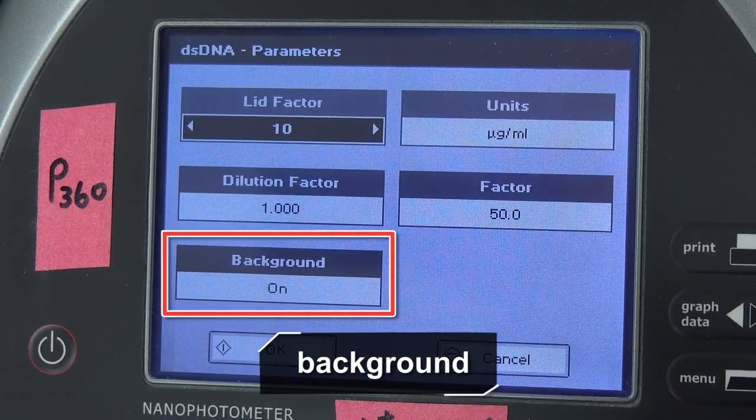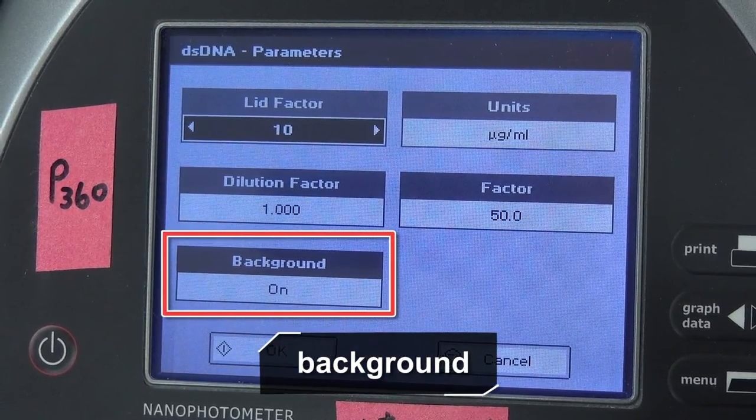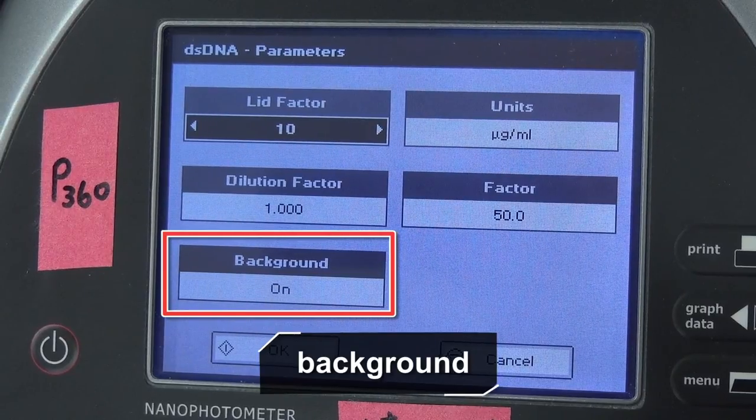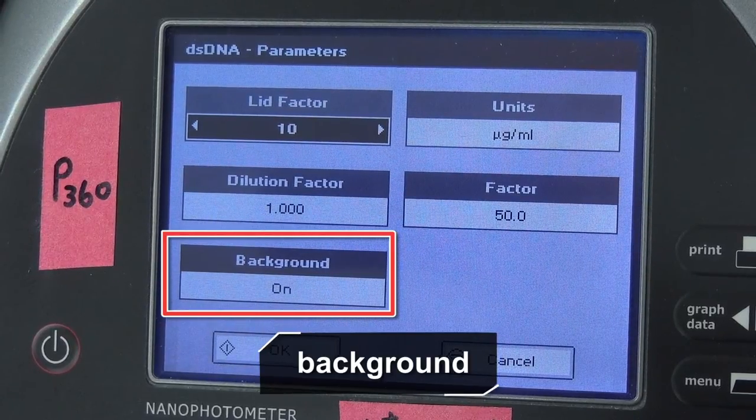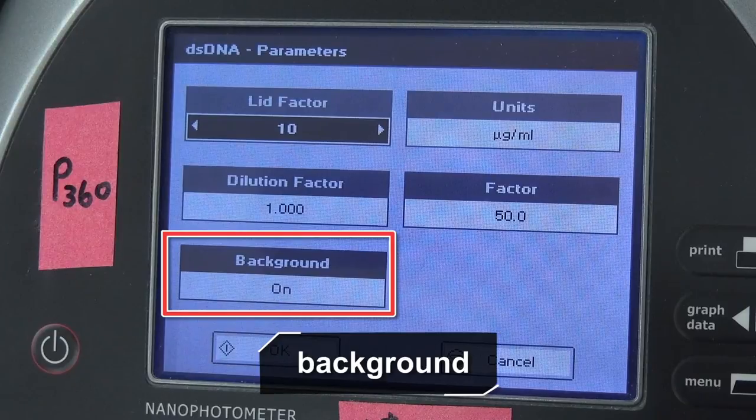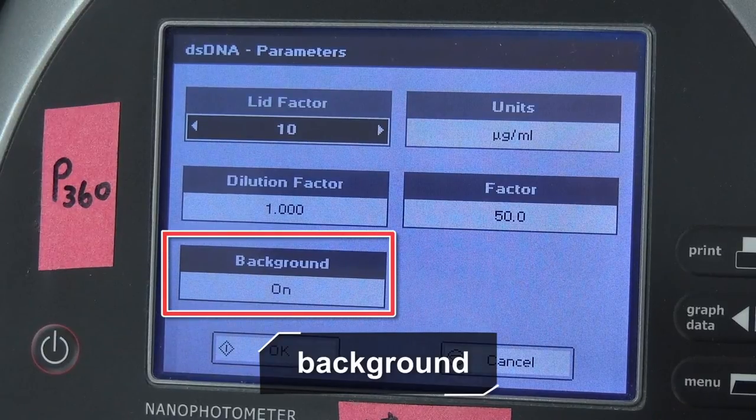The sub-microliter cuvette has a short path length and the absorbance is relatively low. Consequently, background absorbance can easily cause an error. We recommend removing the background value.